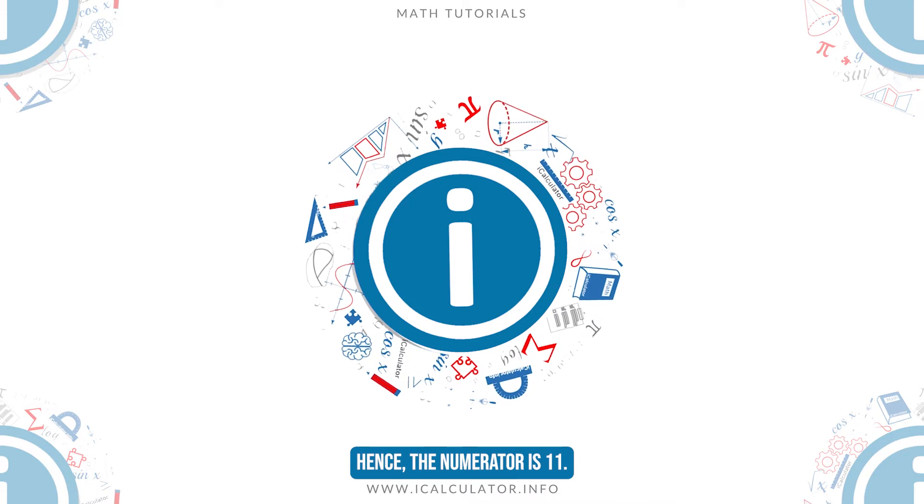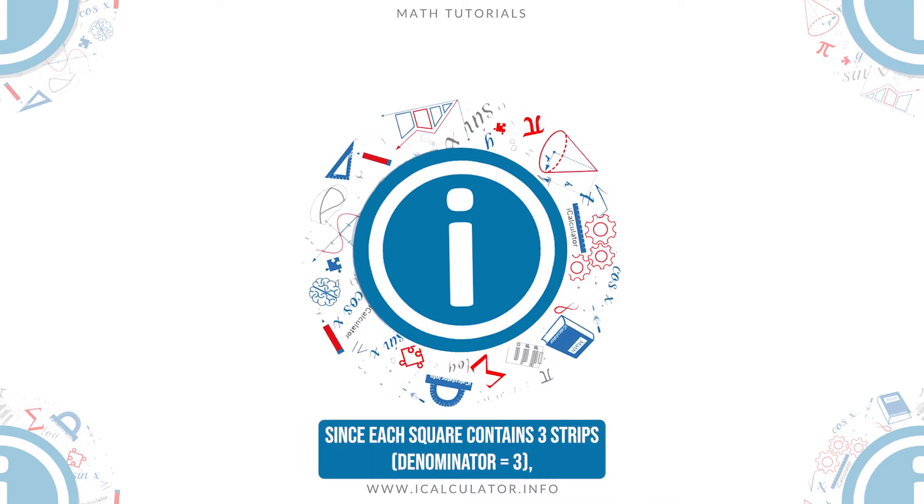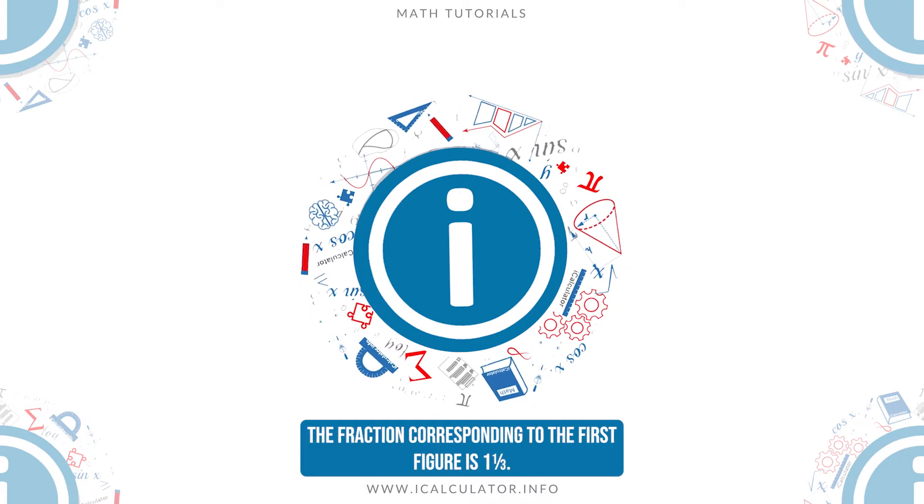Hence, the numerator is 11. Since each square contains 3 strips, the denominator equals 3. The fraction corresponding to the first figure is 11/3.